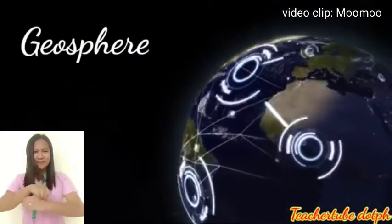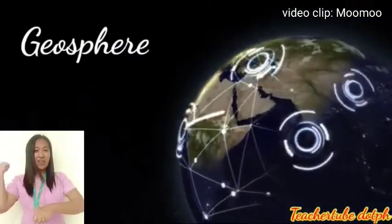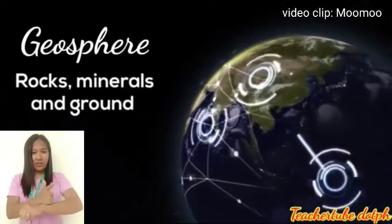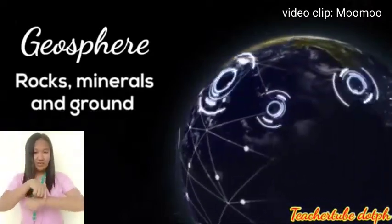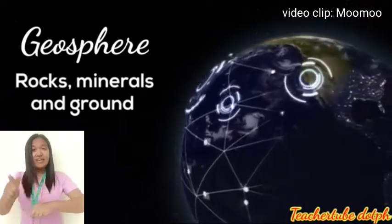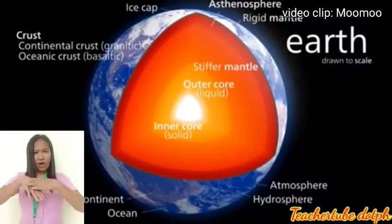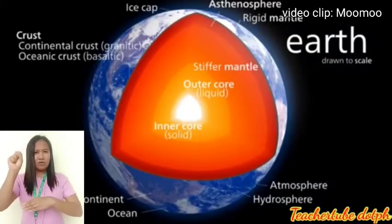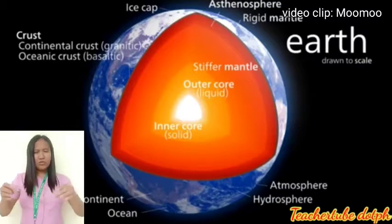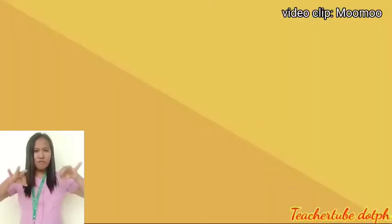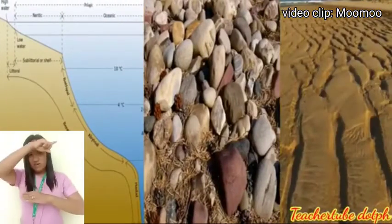The Geosphere describes all the rocks, minerals, and other parts of the ground found on and inside of the Earth. The Geosphere includes the inner core, outer core, crust, and the mantle. It also includes the ocean floor, all the rocks on the surface, the sand in the desert, and everything inside the Earth.